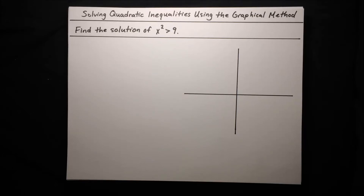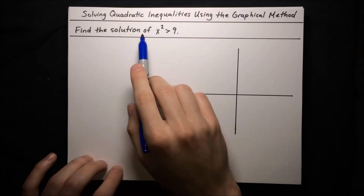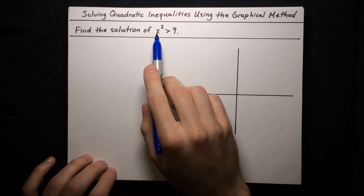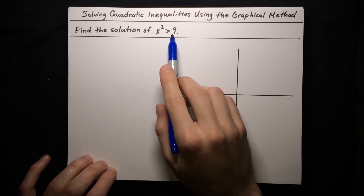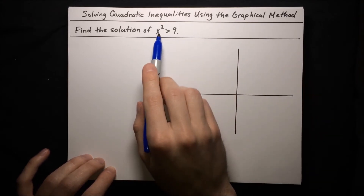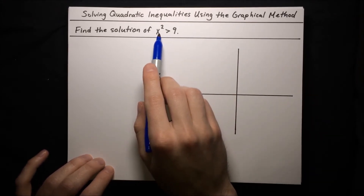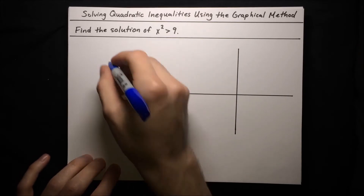In this video, I'm going to show you how to solve quadratic inequalities using the graphical method. So here we want to find the solution of this inequality. The way we do this using the graphical method is we rearrange the inequality so that the right-hand side is 0. So let's do that first.